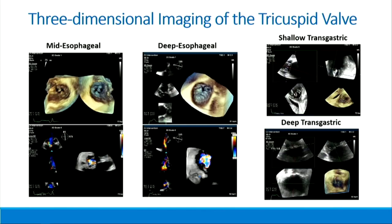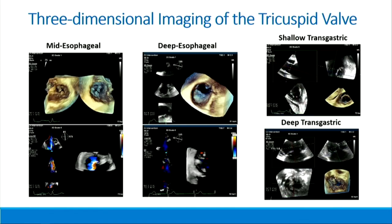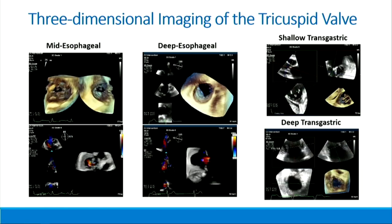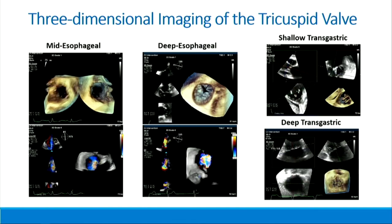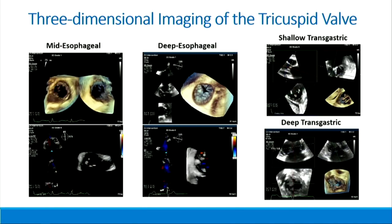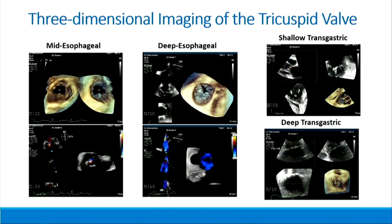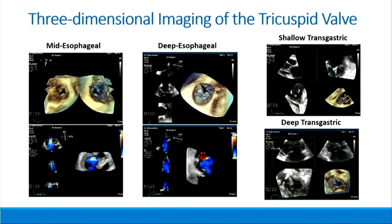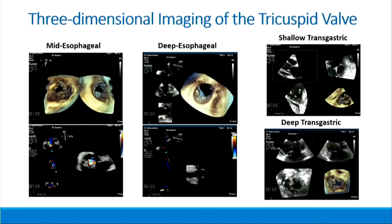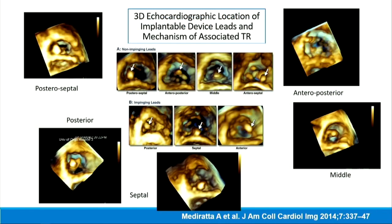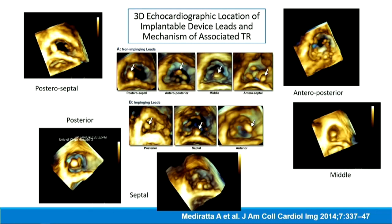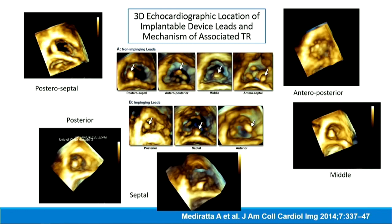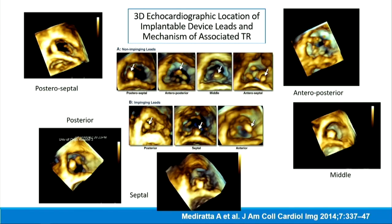Where we've made the greatest difference is the use of three-dimensional imaging. From either mid-deep esophageal or shallow and deep transgastric views, three-dimensional imaging — wherever the valve is imaged well — gives you a lot of information about the number of leaflets, where the leaflet folds are, where the true commissures are, the severity of the lesion, and where the actual regurgitant orifice sits. Three-dimensional imaging has really revolutionized the way we look at pathology, as in this beautiful article on pacemaker-related tricuspid regurgitation from Roberto Lang's lab.